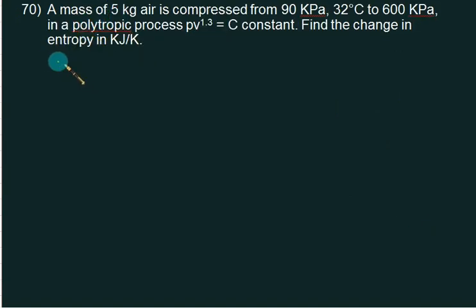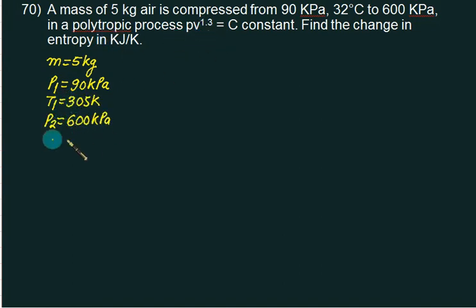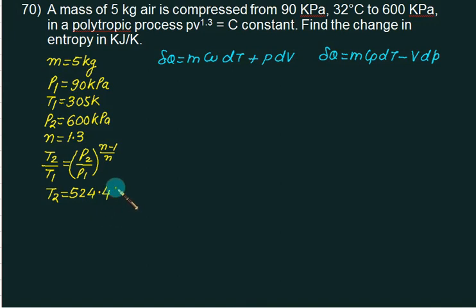Mass of air is 5 kg, compressed from 90 kilo Pascal. So P1 is 90 kilo Pascal with the initial temperature equal to 32 which is 305 to 600 kilo Pascal. With the index of compression is 1.3. So we can very well calculate T2 using the equation T2 by T1 equal to P2 by P1 to the power n minus 1 by n. This is a valid relation for polytropic process. Put this value and solve for T2 first. So your temperature is 472.5 Kelvin.